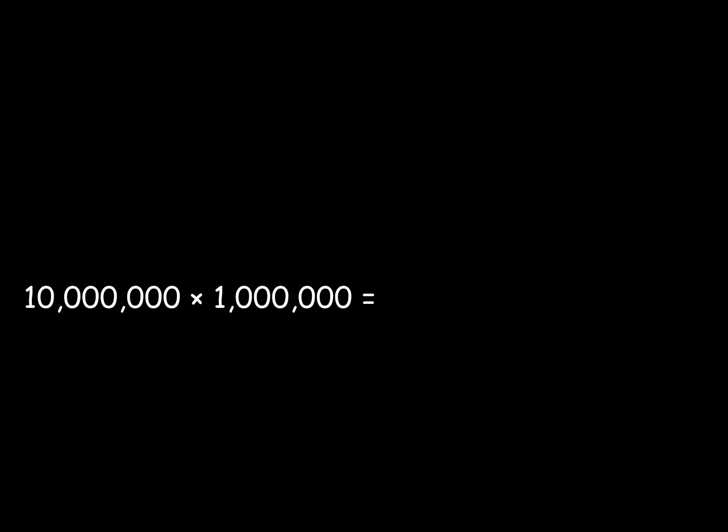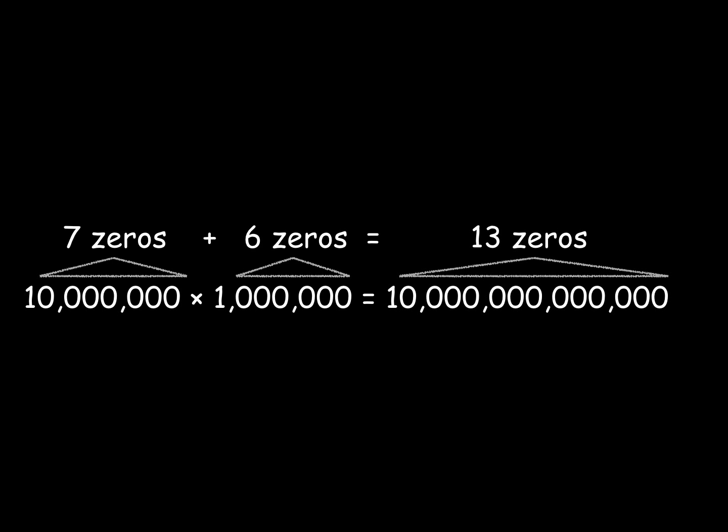You know how it's really easy to multiply powers of 10 together, like 10 million times 1 million? You just count how many zeros and add, and that's how many zeros the result has.